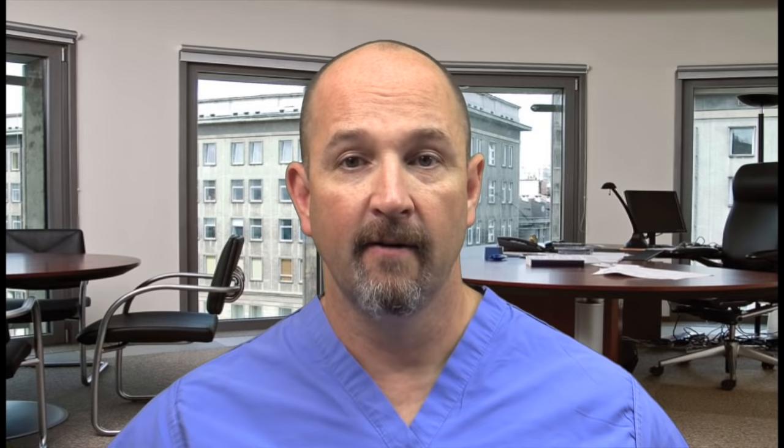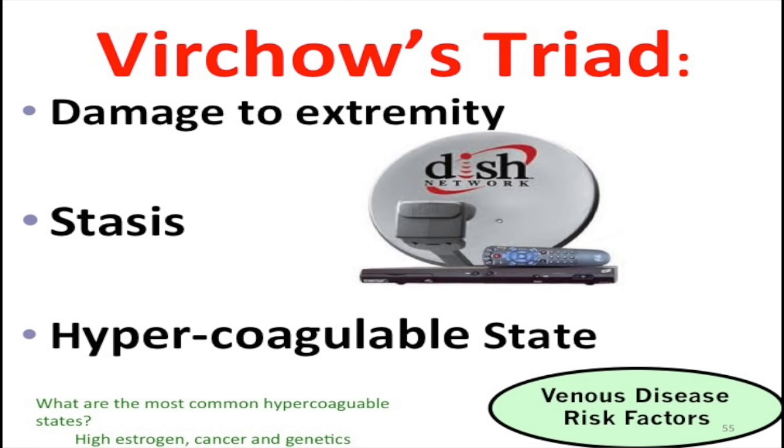For your boards, if they say hemoptysis, think three things: cancer (oat cell or squamous cell), PE, or in a kid — foreign body aspiration. A crawling kid suddenly starts coughing with unilateral lung sounds and hemoptysis needs a bronchoscopy. Virchow's triad: DSH — damaged vessel, stasis, hypercoagulable state.